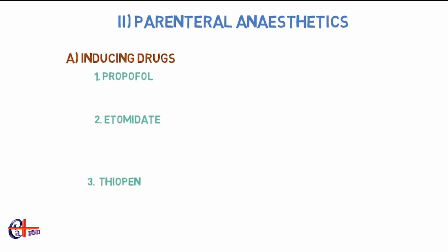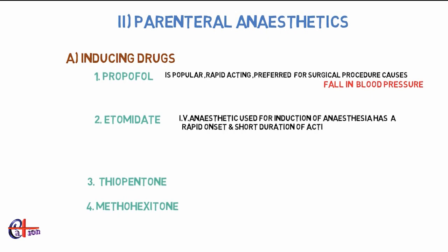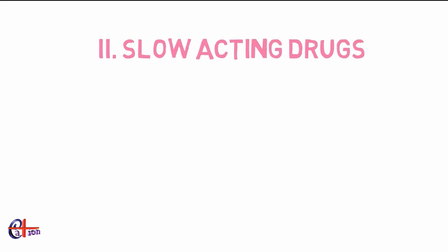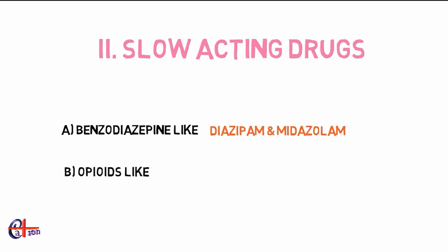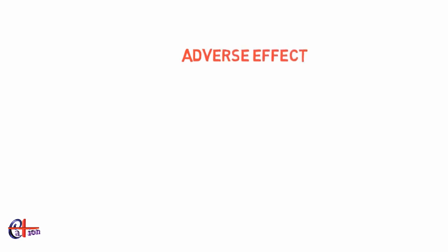Parenteral anesthetics are of two types: inducing drugs and slow-acting drugs. Examples of inducing drugs are propofol, etomidate, thiopentone, and methohexitone. Propofol is popular, rapid-acting, preferred for surgical procedures, but causes a fall in blood pressure. Etomidate is an IV anesthetic used for induction with rapid onset and short duration. Examples of slow-acting drugs include benzodiazepines like diazepam and midazolam, opioids like fentanyl and sufentanil, and ketamine, which produces dissociative anesthesia.